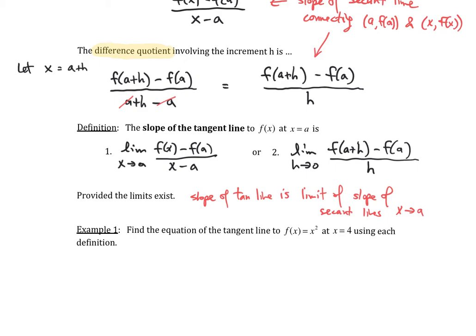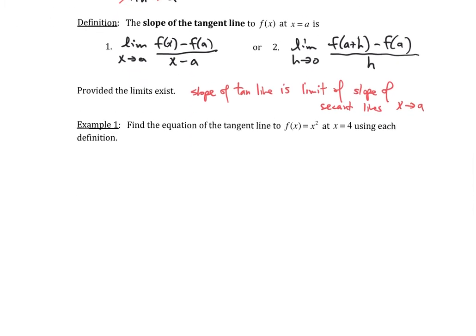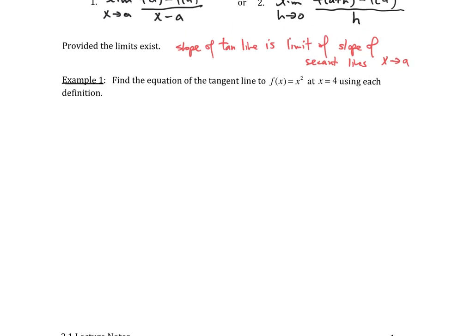Let's look at an example together. Example one says, find the equation of the tangent line to f of x equal to x squared at x equal to 4 using each definition. We're going to use definition one. According to definition one, we're going to have the limit as x approaches a of f of x minus f of a divided by x minus a.